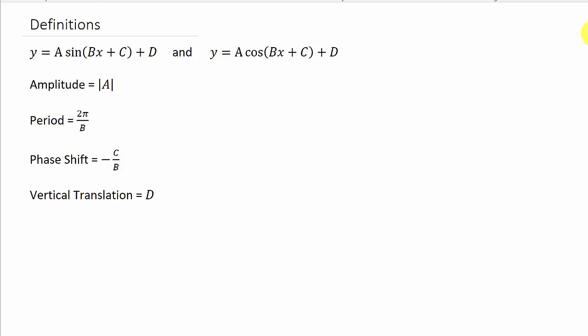We have y equals a sine of bx plus c plus d, and y equals a cosine of bx plus c plus d. Here are your formulas: the amplitude is the absolute value of a — whatever's in front of the trig function. The period is 2 pi over b, where b is the number in front of x. The phase shift is negative c over b. And the vertical translation is d. The phase shift tells you how the graph moves left and right, and the vertical translation tells you how the graph moves up and down.